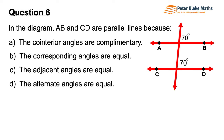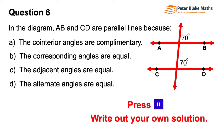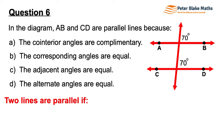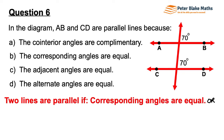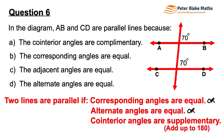Question 6. In the diagram, AB and CD are parallel lines because... corresponding angles are equal, the adjacent angles are equal, or the alternate angles are equal? Two lines are parallel if corresponding angles are equal, or alternate angles are equal, or co-interior angles are supplementary — adding up to 180 degrees. If one of those conditions is true for a set of lines, then they can be established as true parallel lines.